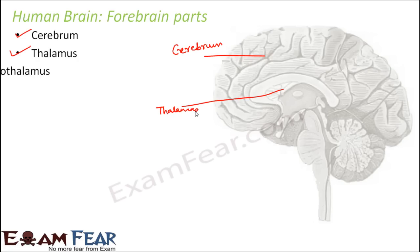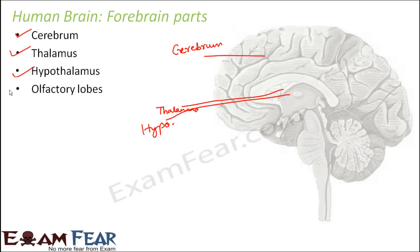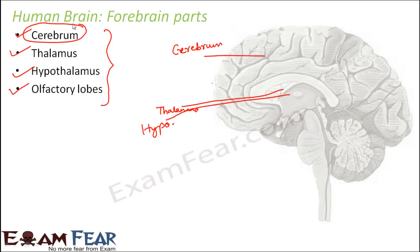Below the thalamus you have the hypothalamus. And the olfactory lobes are present towards the back side of the brain — the side not visible from here. All these parts together form the forebrain; however, the cerebrum is the most prominent and the most developed part.